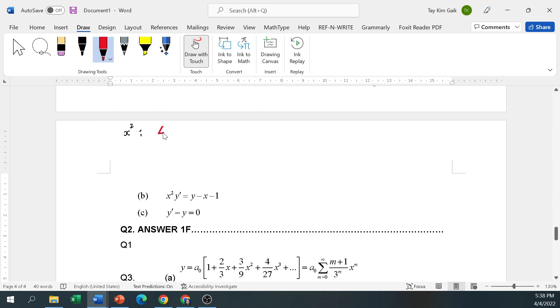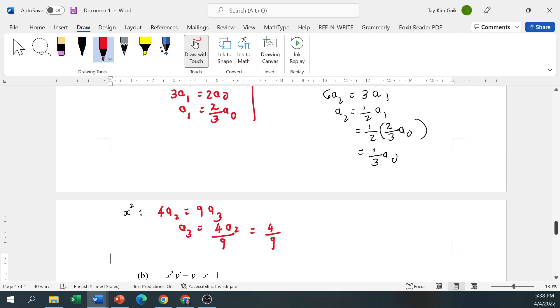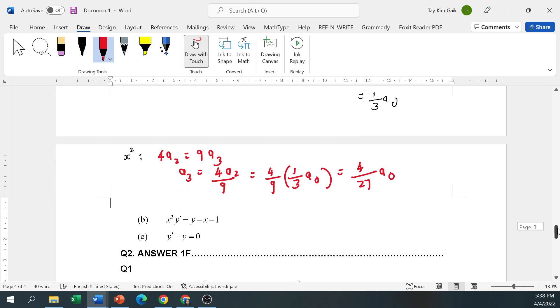We got 4a2 equal to 9a3. Solving for a3, so a3 is 4a2 divide 9. a2 is one third a0, so 4 over 27 a0. Correct.